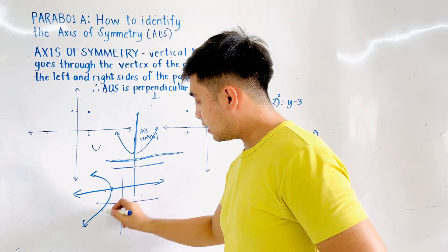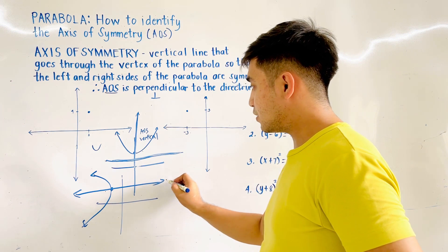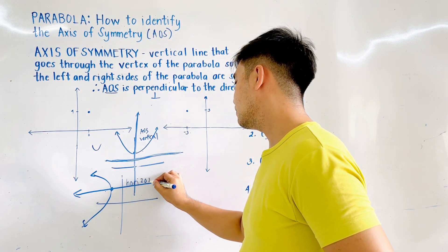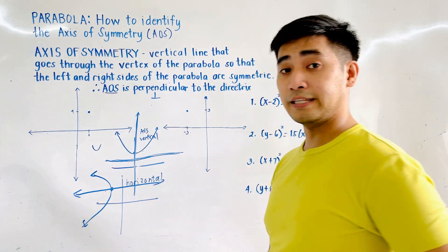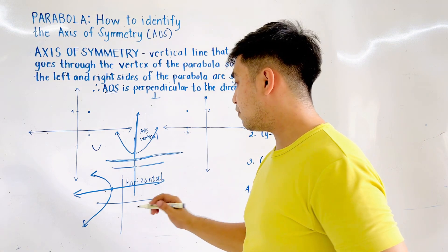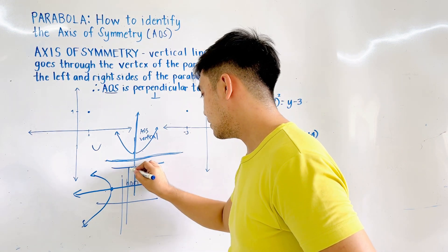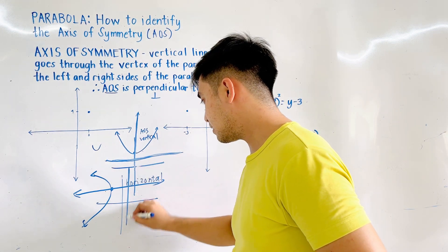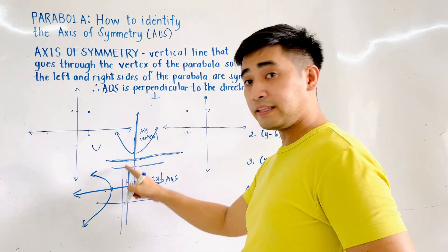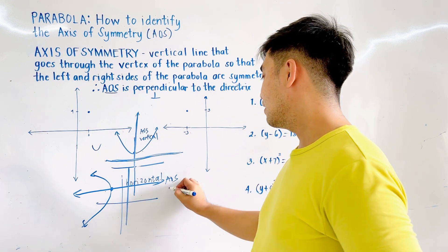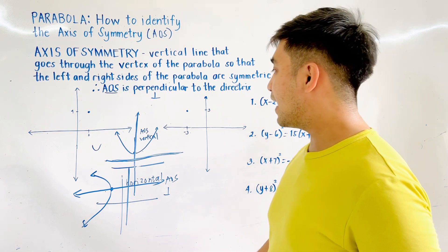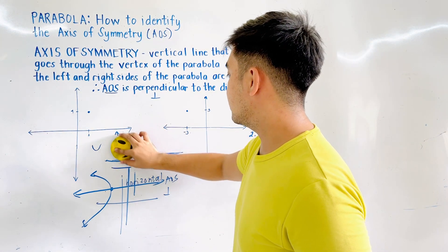If this is the parabola going to the left and this is the axis of symmetry, therefore the axis of symmetry is horizontal. If the parabola is opening to the left, this is the directrix, and the AOS and the directrix are perpendicular. So that is how we define axis of symmetry.